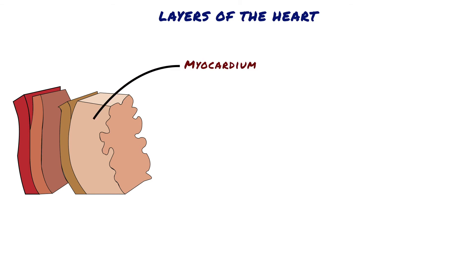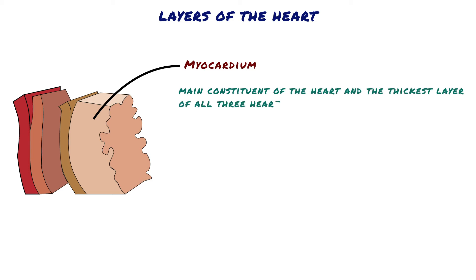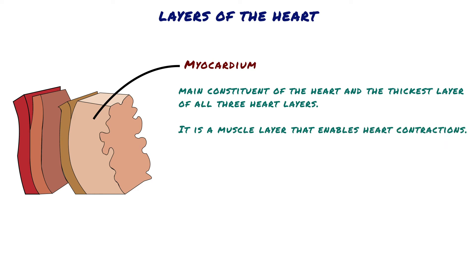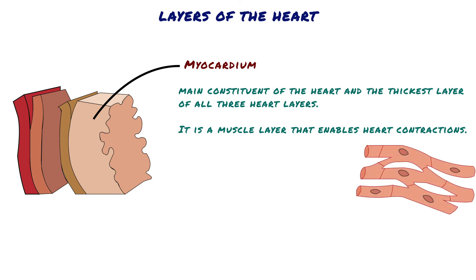Myocardium. The myocardium is functionally the main constituent of the heart and the thickest layer of all three heart layers. It is a muscle layer that enables heart contractions. Histologically, the myocardium is comprised of cardiomyocytes. Cardiomyocytes have a single nucleus in the center of the cell, which helps to distinguish them from skeletal muscle cells.